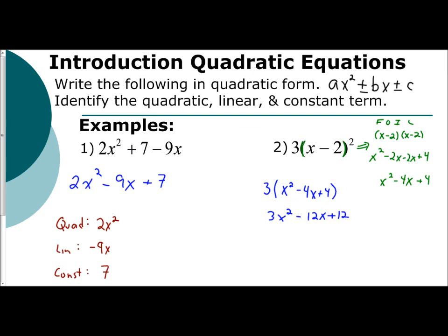So let's identify those. Your quadratic term is 3x². Your linear term is -12x. And your constant is 12.